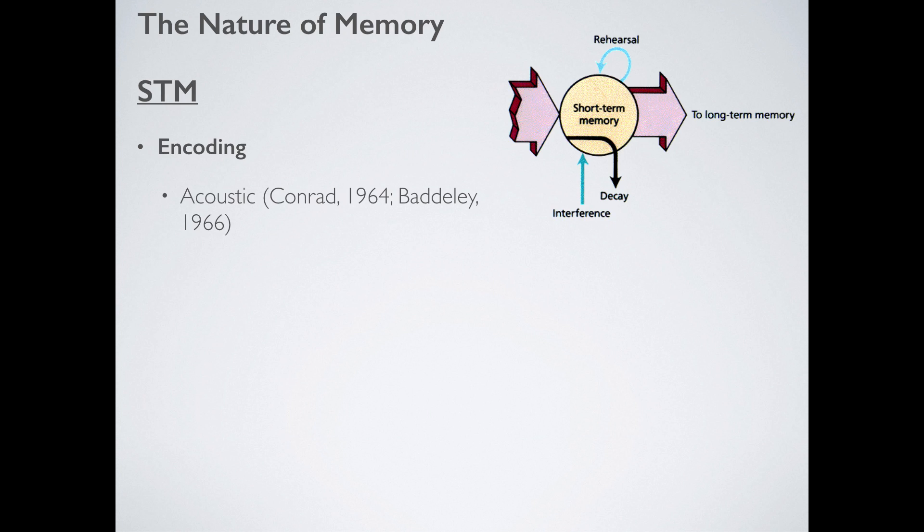In the short-term memory, we can reliably say that information is encoded acoustically. Your short-term memory remembers the sound of words. Conrad in 1964 shows that if you were given a list of acoustically dissimilar letters, you remember them a little bit better. If you're given letters that are acoustically similar, things like B, C, E, these are all acoustically similar, you kind of mess them up. You can't really remember them. Baddeley does something similar, but we'll look at his study in a little bit.